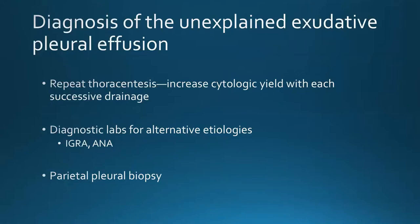If you have an unexplained exudative pleural effusion, you can repeat the thoracentesis — cytologic yield increases with each successive drainage, though draining more than three times doesn't significantly improve diagnostic yield. Check for other etiologies: TB-related, lupus-related, etc. If you ultimately can't find a cause, you should sample the parietal pleura via medical thoracoscopy or a CT-guided pleural biopsy. If medication-induced, stop the medications. Ultimately these patients may need a parietal pleural biopsy to rule out malignancy.